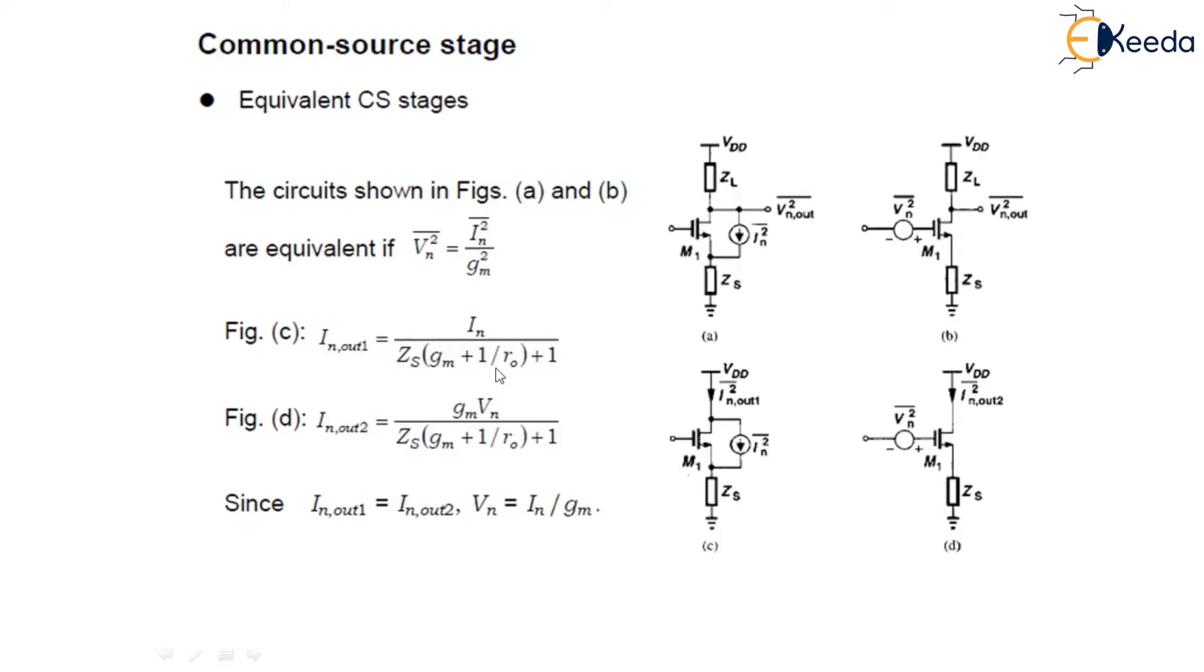These two current sources will be equal as we have Vn equals the noise voltage equals Im upon Gm where Dn equals the gate-referred noise of Em.